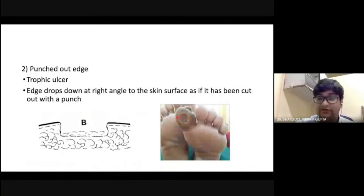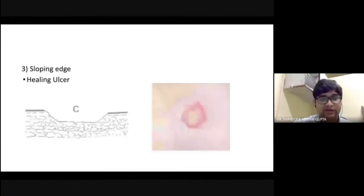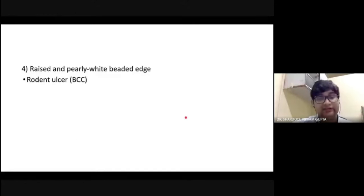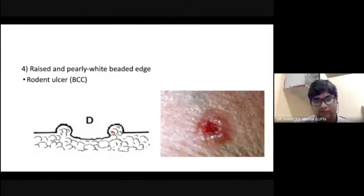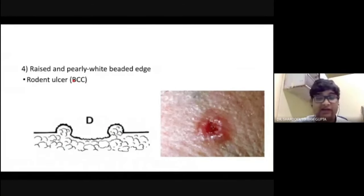This is the punched-out ulcer. The next edge type is the sloping edge, usually seen in a healing ulcer — the edges are sloping and you cannot make a sharp demarcation. The next one is the raised and pearly white beaded edge, seen in rodent ulcer — the edge will be pearly white and raised, but it will not be everted. This raised edge type is seen in rodent ulcer, also known as basal cell carcinoma.